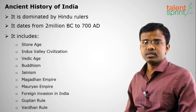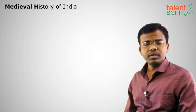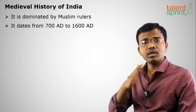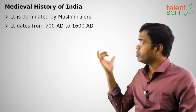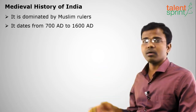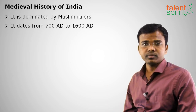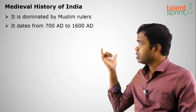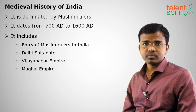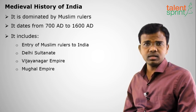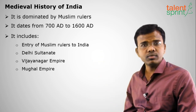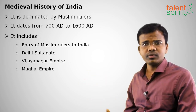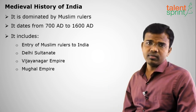Next is medieval history, which is dominated by Muslim rulers. With the entry of Muslim rulers into India, medieval history starts, dating from 700 AD to 1600 AD. It ends with the entry of British rule or the East India Company. Medieval history includes the entry of Muslim rulers, the Vijayanagara Empire, the Delhi Sultanate, and the Mughal Empire.